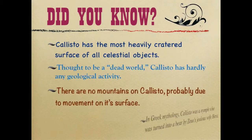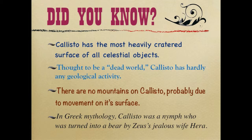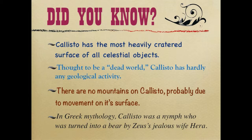I'll conclude my presentation with a few did-you-know facts. Did you know that Callisto has the most heavily cratered surface of all celestial objects currently known? Did you know Callisto is thought to be a dead world because there is hardly any geological activity? Did you know that there are no mountains on Callisto, probably due to movement on its surface? And finally, in Greek mythology, did you know that Callisto was a nymph who was turned into a bear by Zeus's jealous wife Hera?